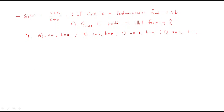Hello everyone. In this session we will discuss some problems regarding compensators. The first problem: given gc(s) = (s+a)/(s+b), if gc(s) is a lead compensator, find a and b. The options are: A) a=1, b=2; B) a=3, b=2; C) a=-3, b=-1; D) a=3, b=1.